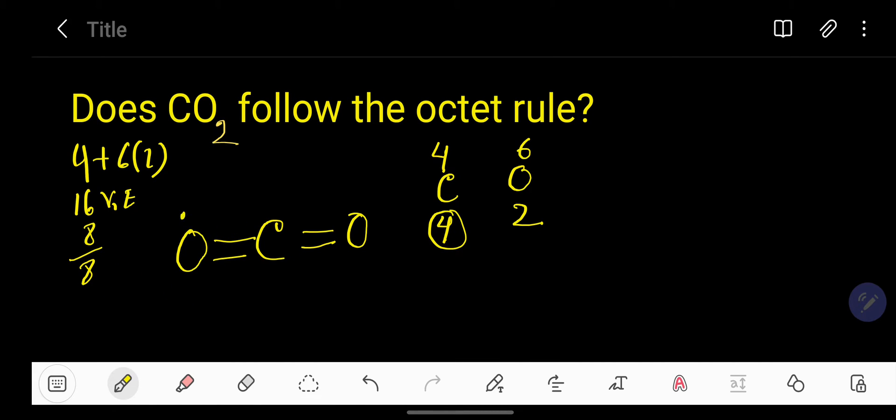So to fulfill octet we will put here two pairs and here two pairs. So two, four, six, eight, ten, twelve, fourteen, sixteen. So here we have used the sixteen valence electrons. This is the Lewis structure.